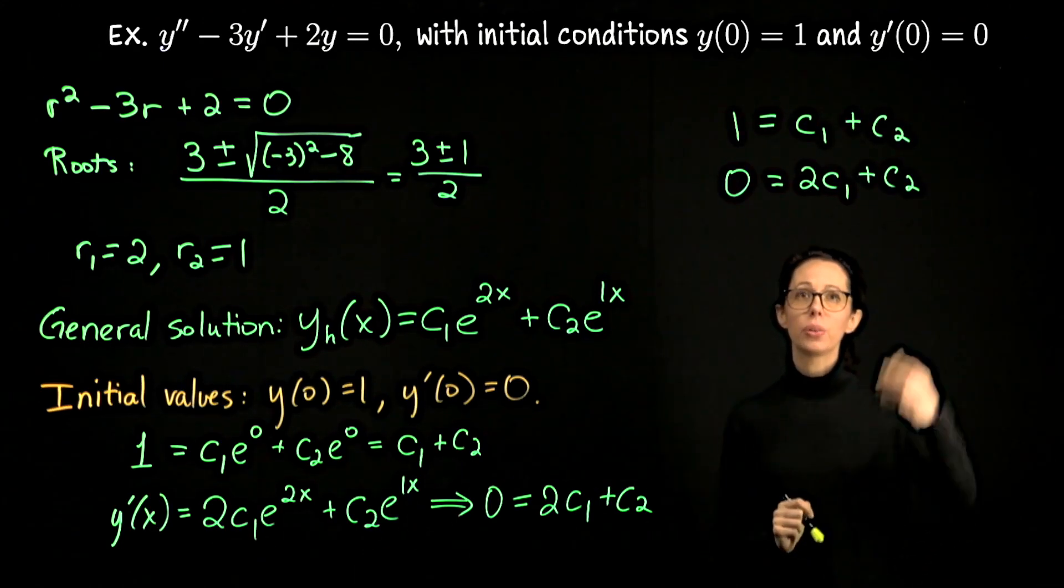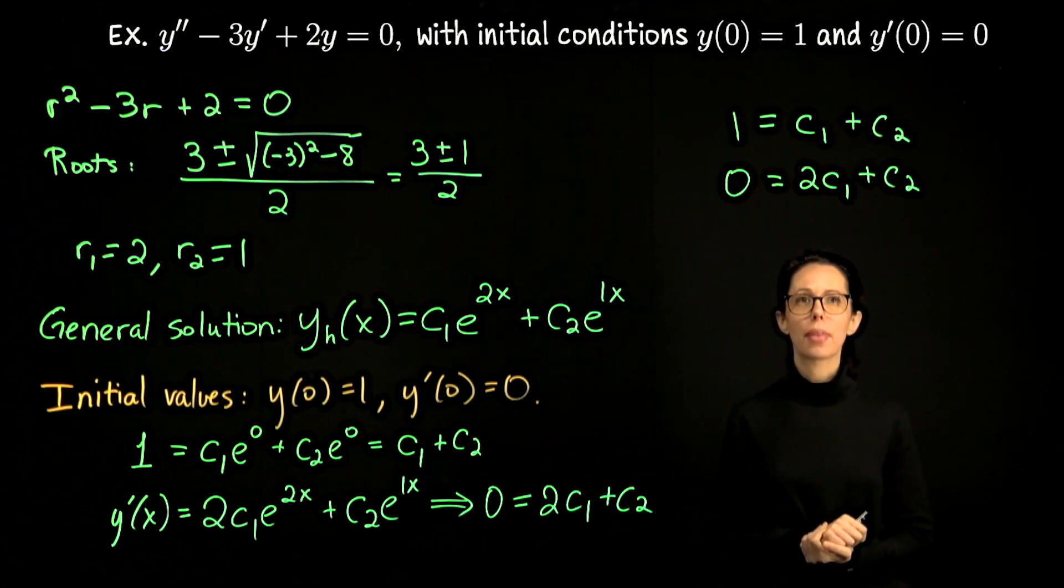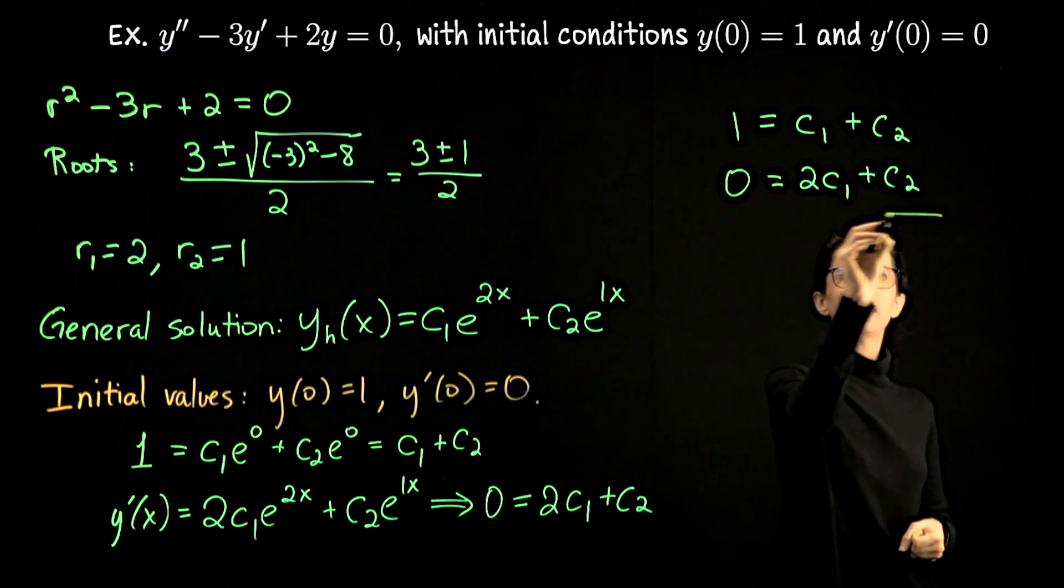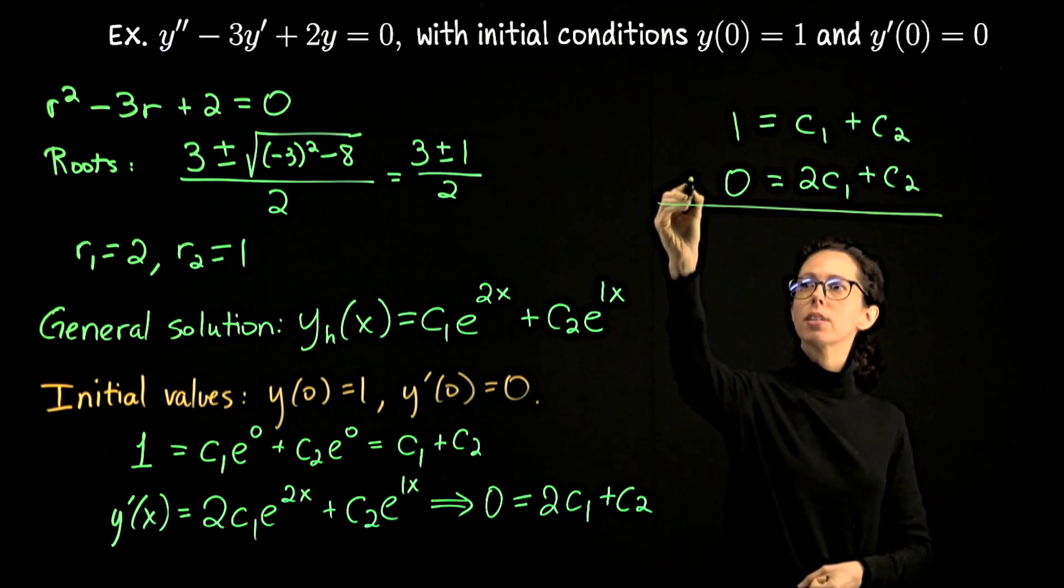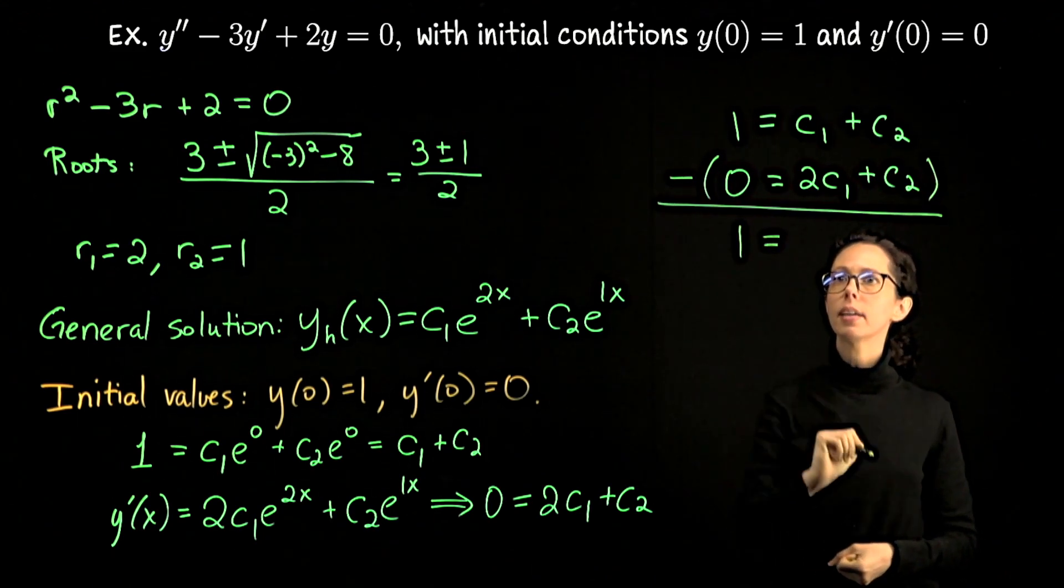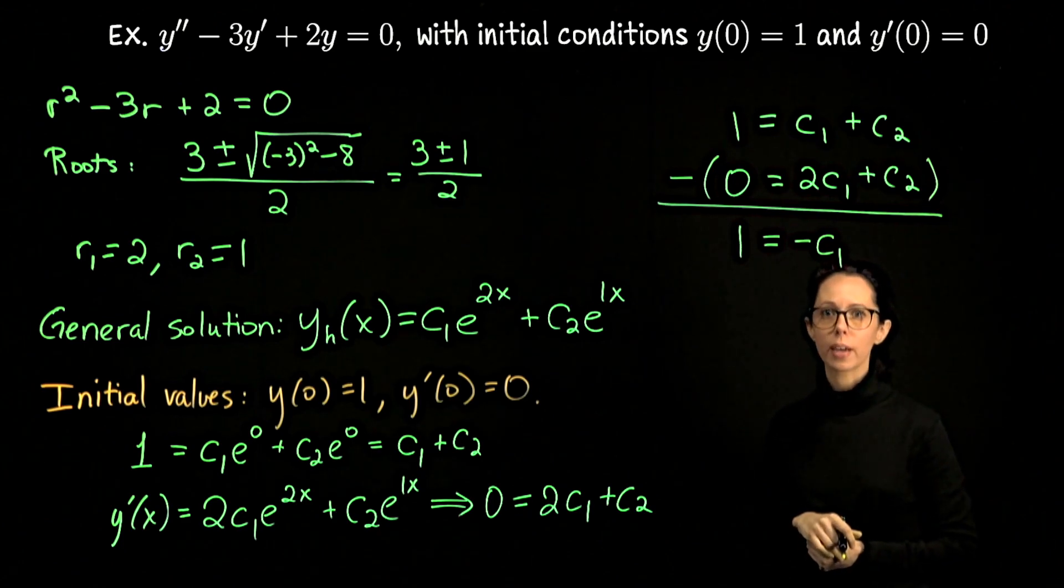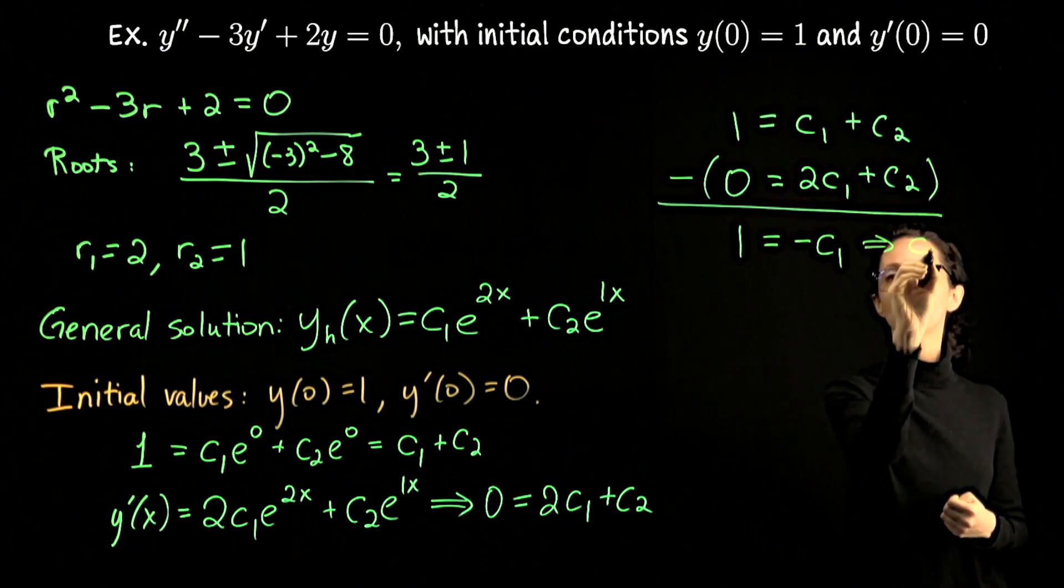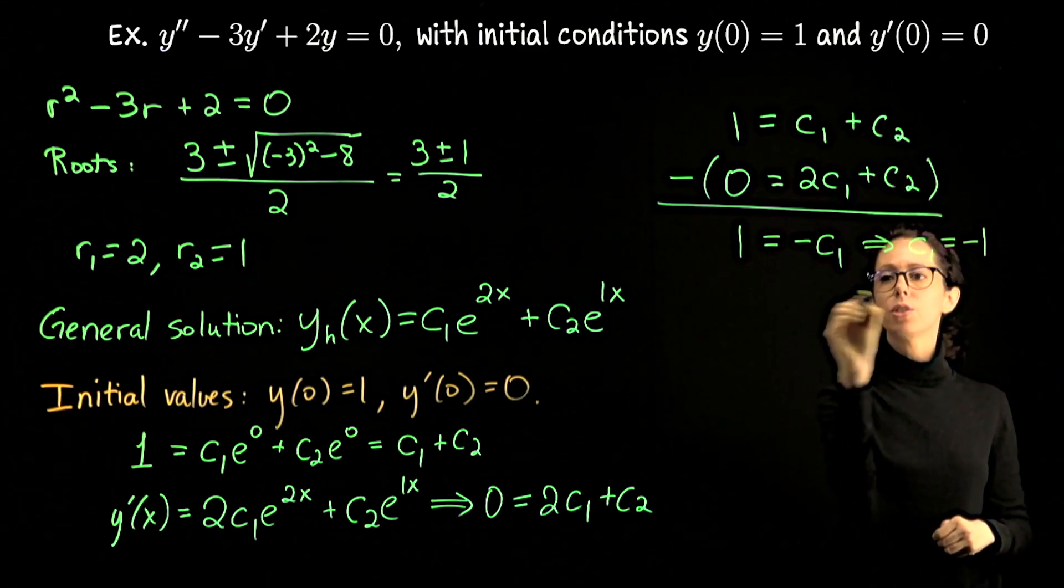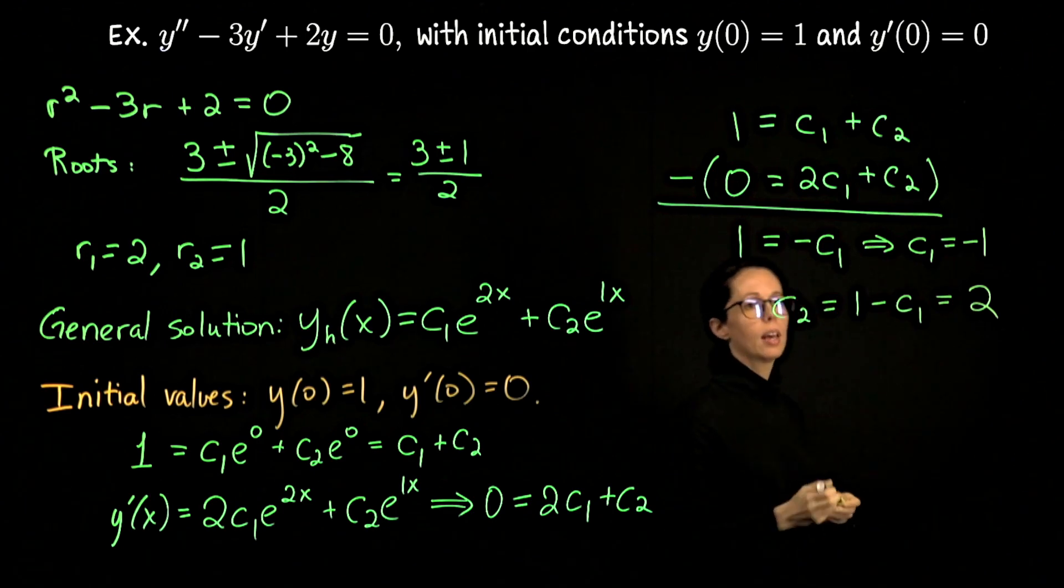To solve for c1 and c2, you can take the system of equations and use either elimination or substitution, or a matrix if you are familiar with that method. I'm going to do elimination. So let me take the first equation I've written here and subtract off of it the second equation. So we will have 1 minus 0 is 1 on the left-hand side, c1 minus 2c1 is negative c1 on the right-hand side, and then c2 minus c2 cancels out. So just to basically rewrite this, c1 is negative 1. And that tells us, if we look here, that c2 is 1 minus c1. So that's going to be 2.